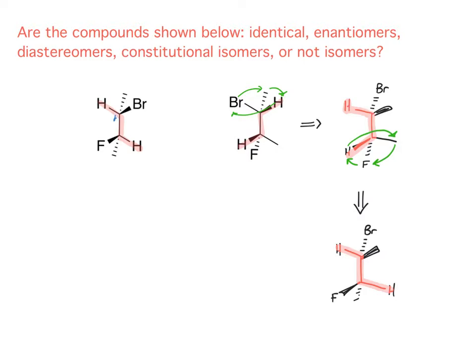Our chiral center here has the bromine out and the methyl back. Well, in this molecule, it's inverted. The bromine's back and the methyl's out. Our second chiral center has the fluorine out and the methyl back, and in the other compound, it stays the same. So one chiral center stayed the same, one was inverted.